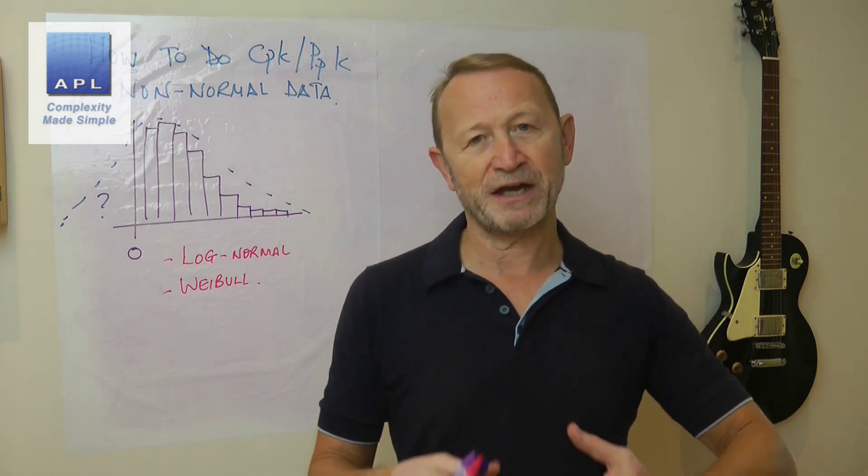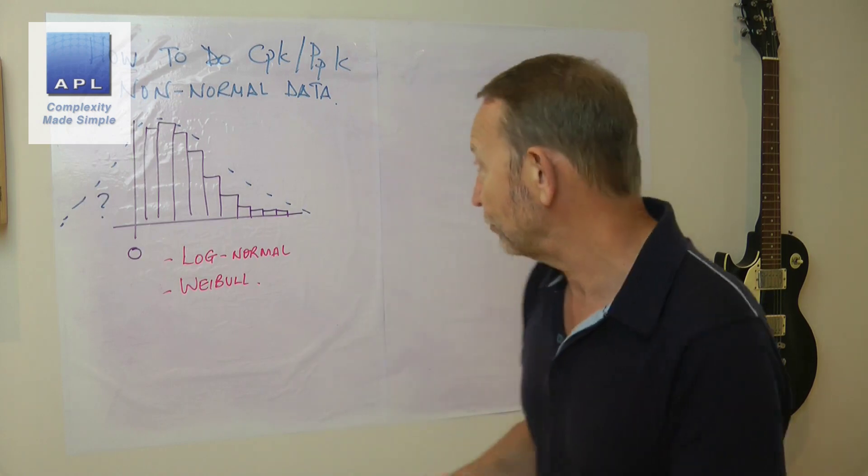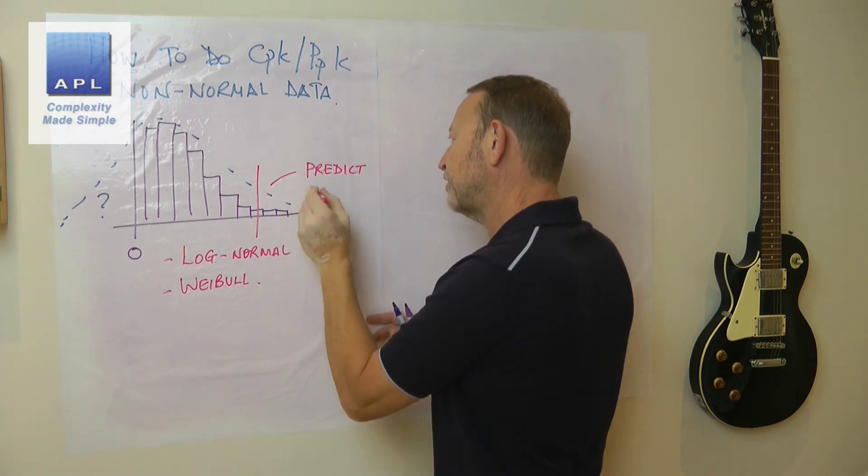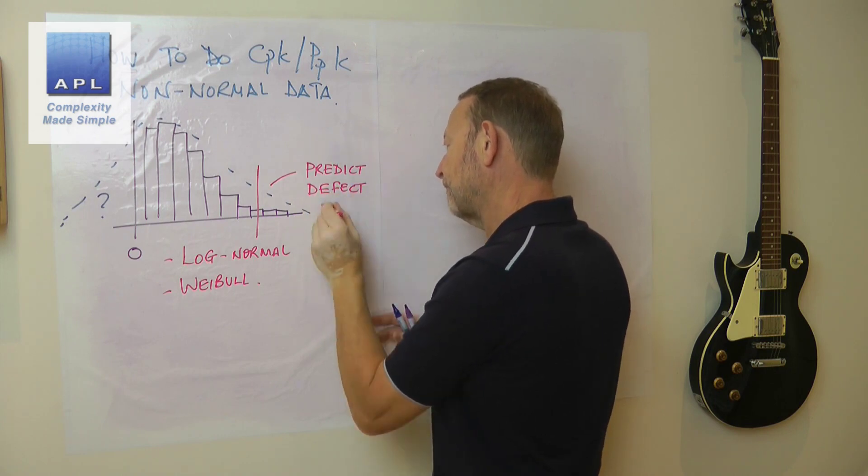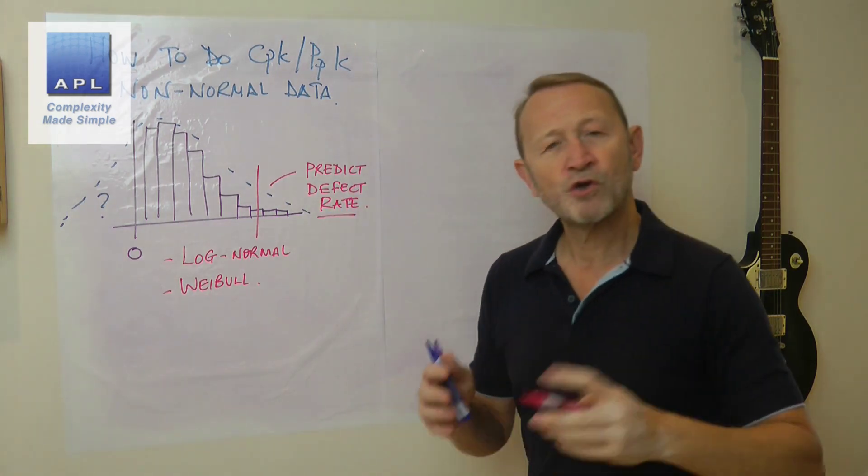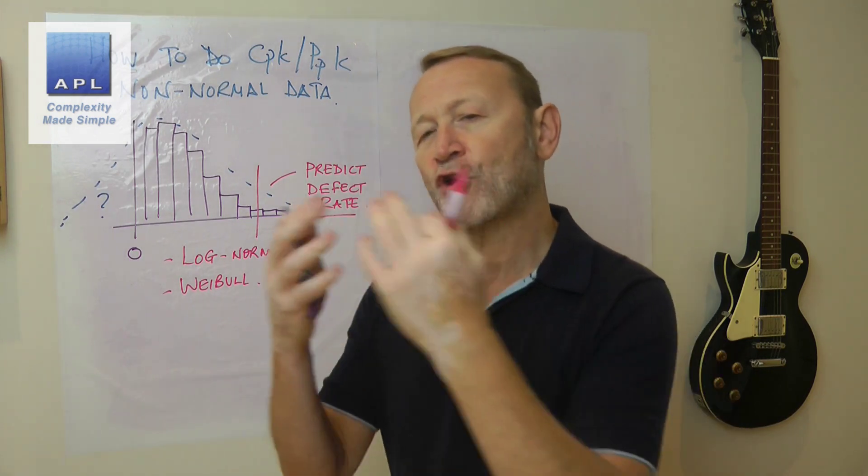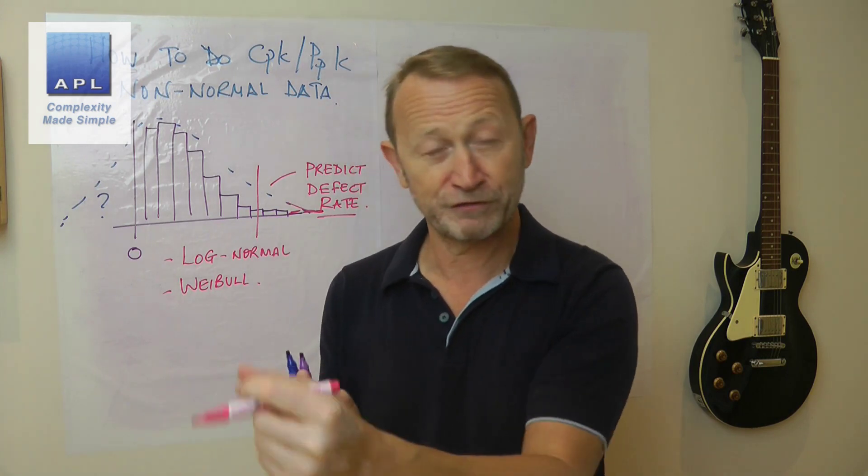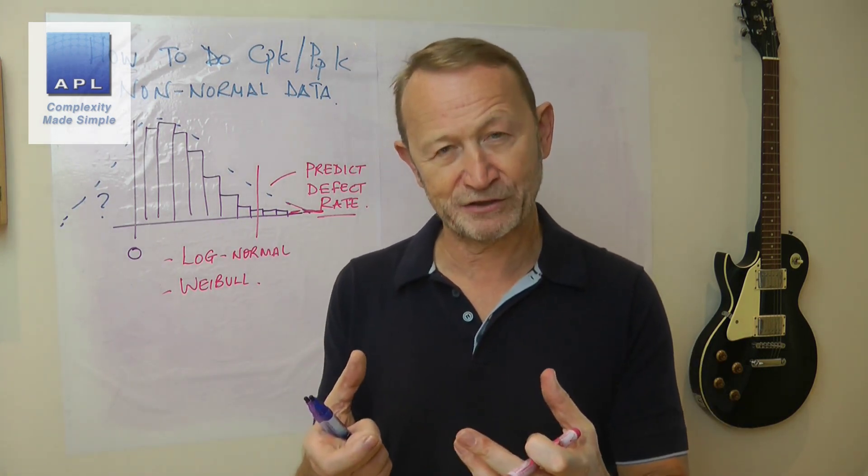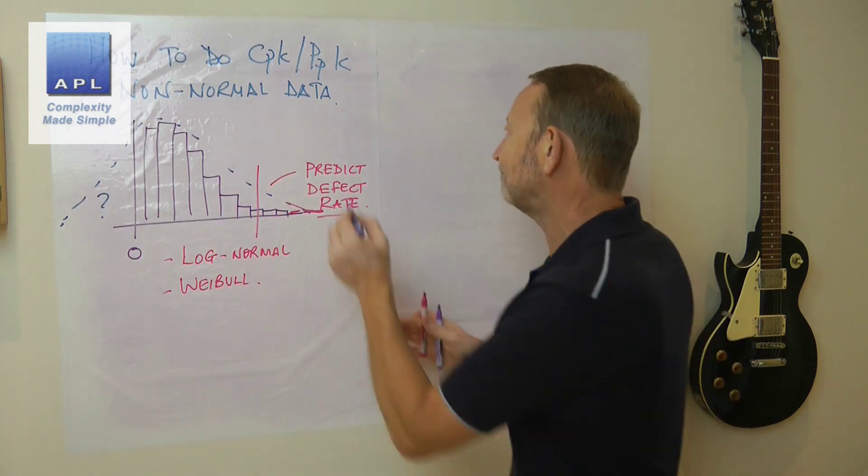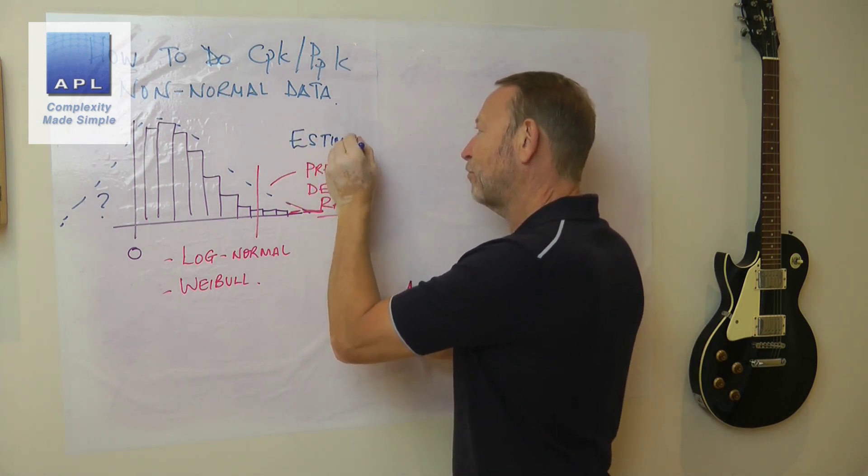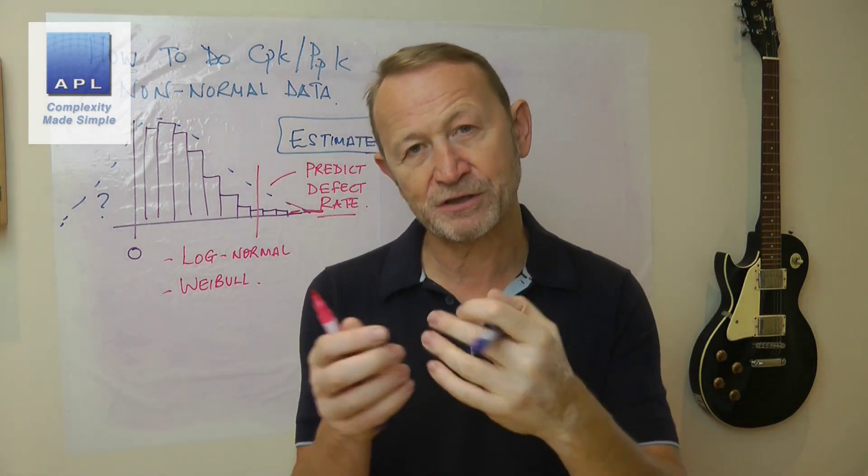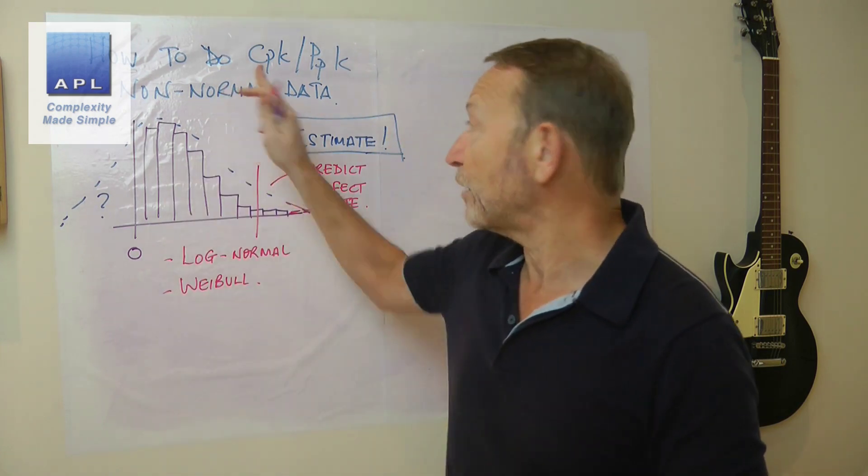When you do CPK PPK, what is the analysis trying to do? Well, what the analysis is trying to do is predict your defect rate. Okay, so rather than observing the defect rate, you're trying to predict, you're especially trying to predict maybe data that you haven't seen, that's a little bit more extreme. And therefore, your observed defect rate is always going to underestimate reality. And that's why we use CPK and PPK, because it is a better estimate of what's going to happen. And this is the crucial point, you are generating an estimate of your reject rate when you switch your machine on. That's what this tool is for.